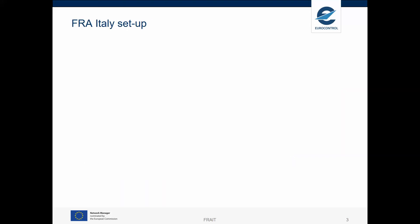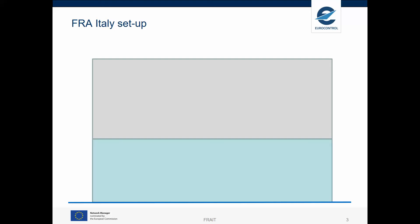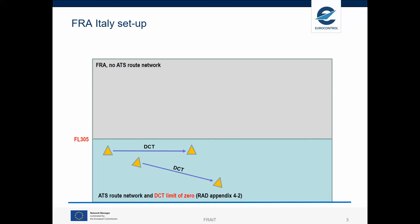The setup for the free airspace in Italy is as follows. The free airspace starts from flight level 305 onwards, and in the free airspace there is no ATS route network. In the airspace below, the ATS route network remains, and there is a DCT limit of zero. This means any direct segment where both points are laterally and horizontally within that airspace will be invalidated by IFPS.